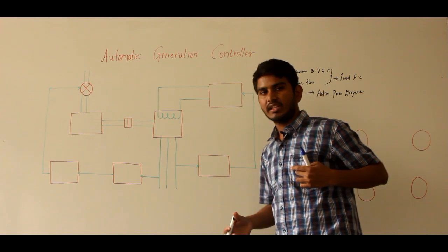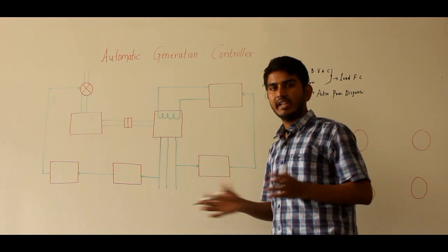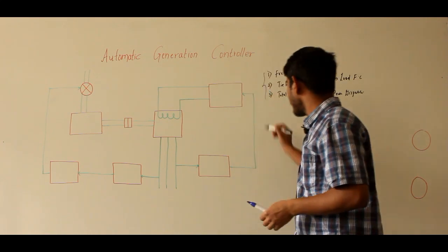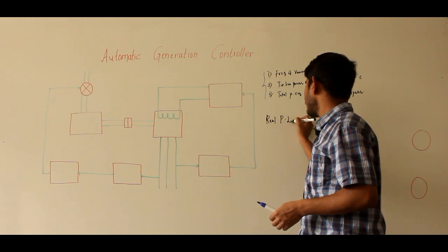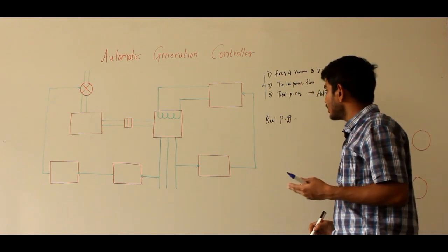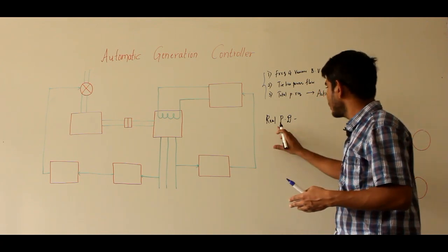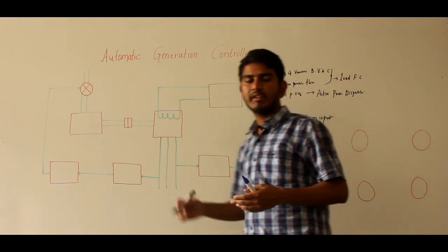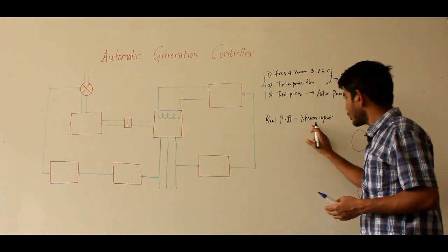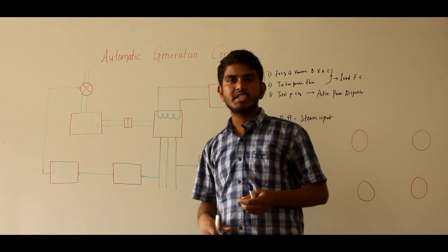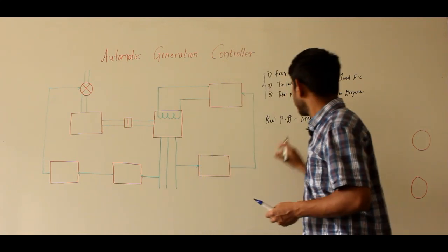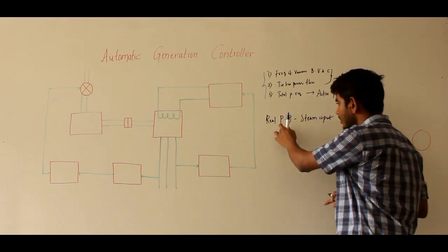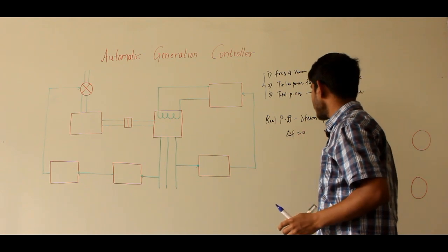Real power demands will be varying. As these demands vary, bus voltage and frequency will also vary. In order to match the real active power generation with the active power demand, we can adjust the steam input. The steam input to the turbo generators — or water input for hydro generators — must be continuously regulated so that real power generation will match the real power demand. When real power generation matches real power demand, the change in frequency will be equal to zero.